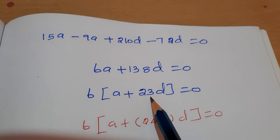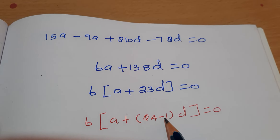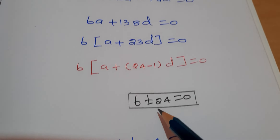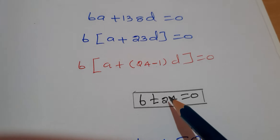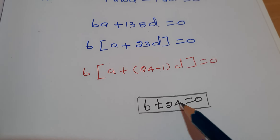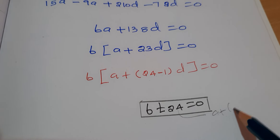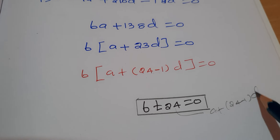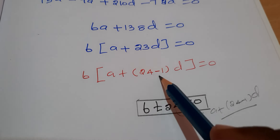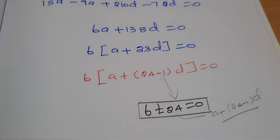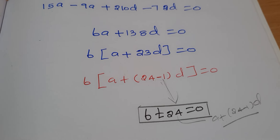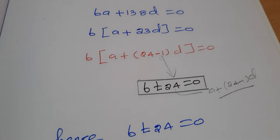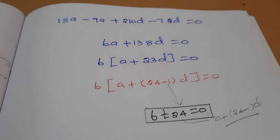How do we get this? 24 minus 1 — what is it? It is the 24th term. T24 equals a plus 24 minus 1 into d, which equals a plus 23d. Therefore, 6 times T24 is equal to 0.